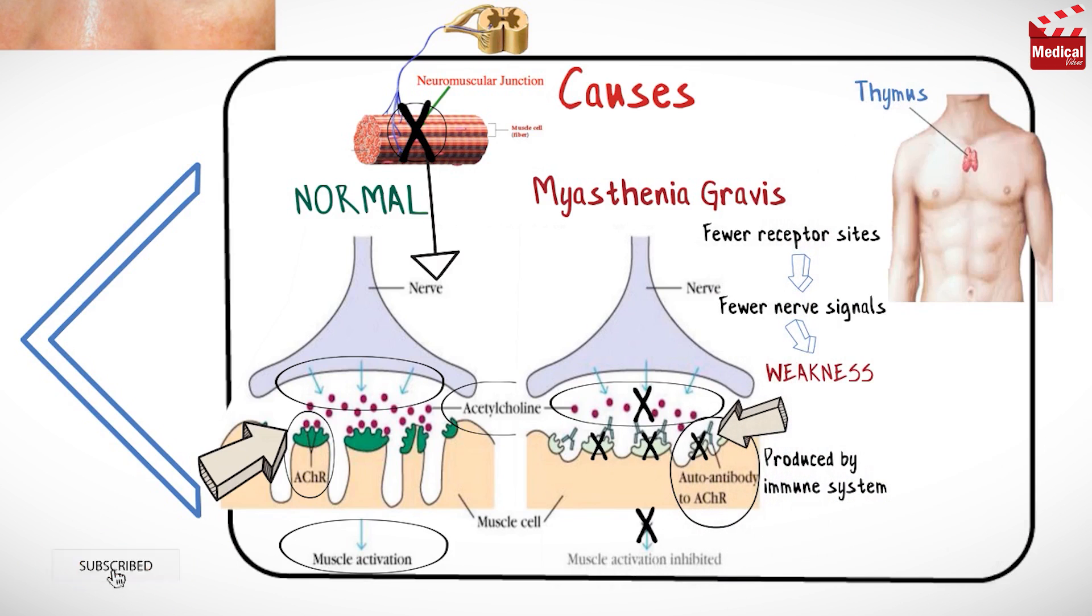It is believed that the thymus gland, a part of the immune system located in the upper chest beneath the breastbone, may trigger or maintain the production of these antibodies. Some factors can make myasthenia gravis worse including fatigue, illness, stress, extreme heat, and some medications such as beta blockers, calcium channel blockers, and some antibiotics.